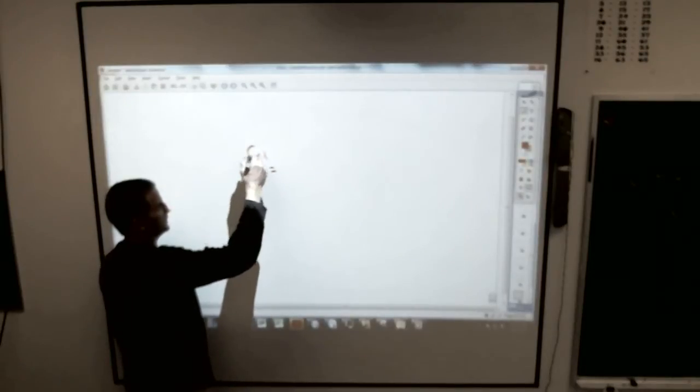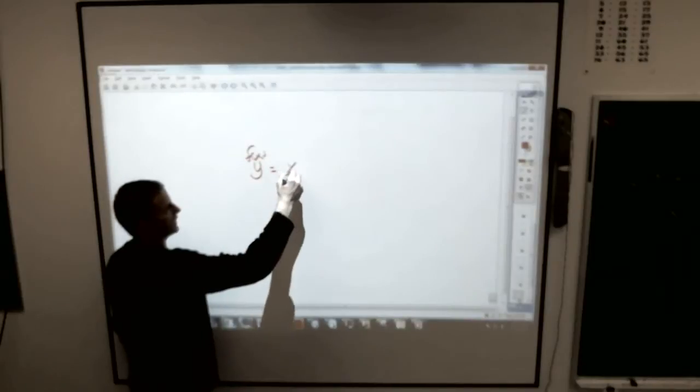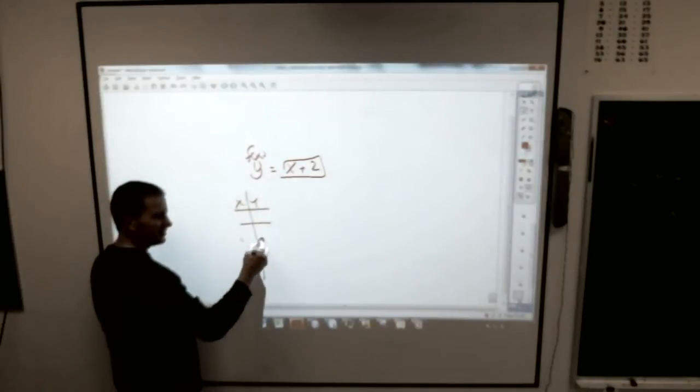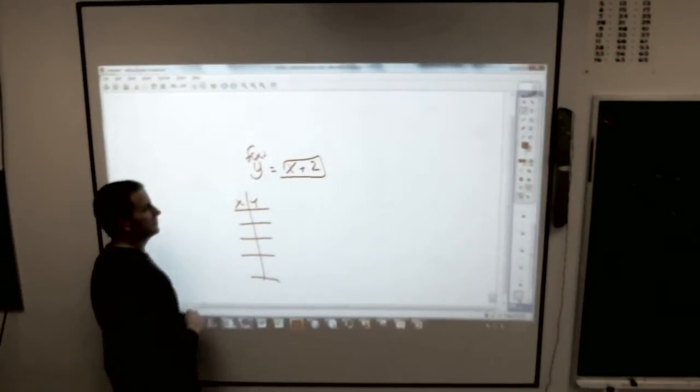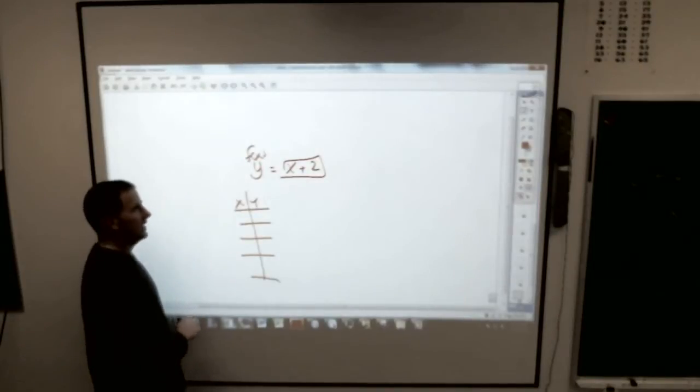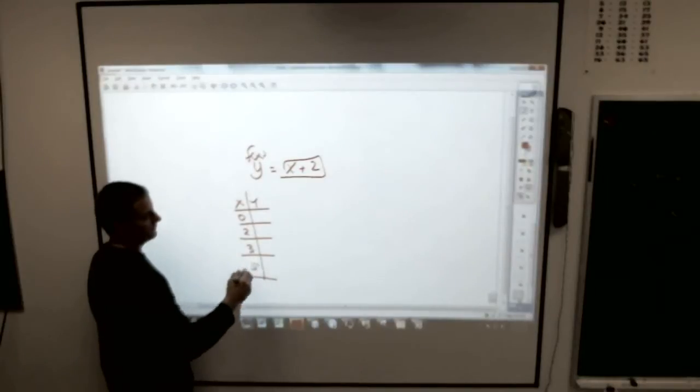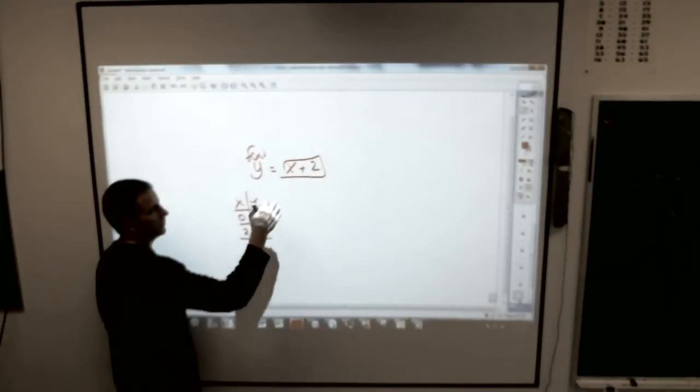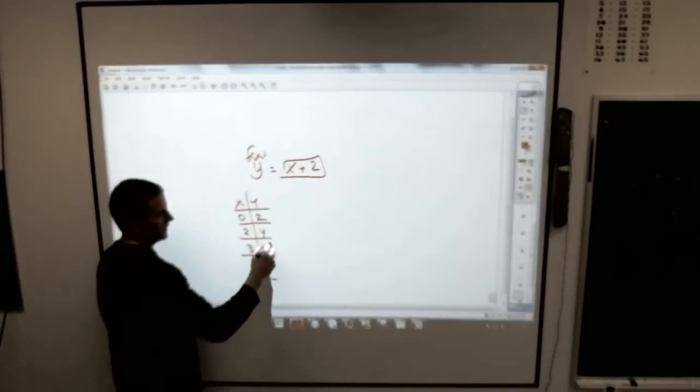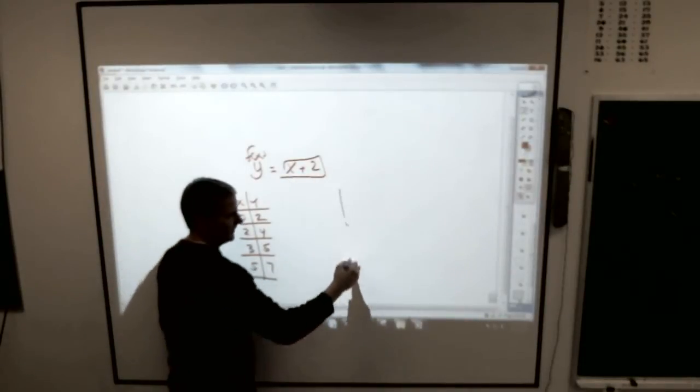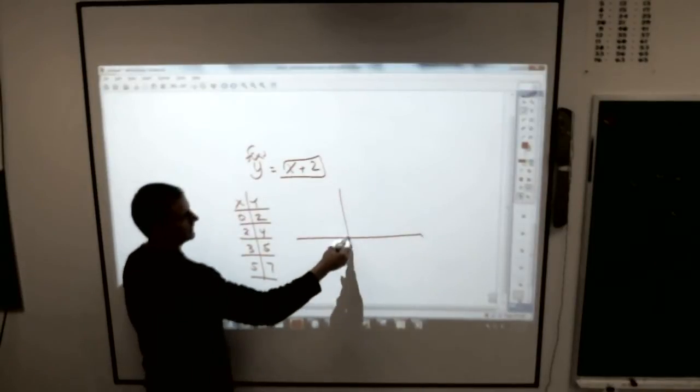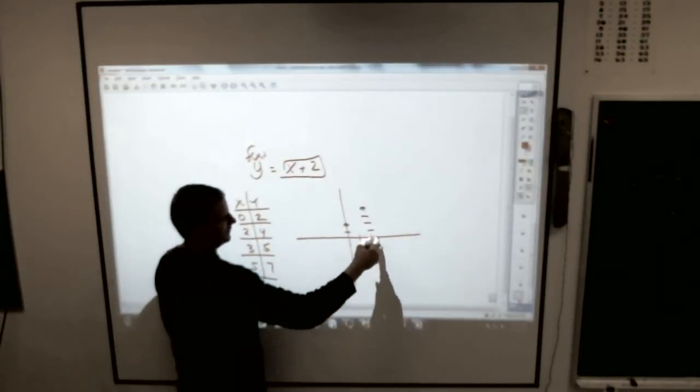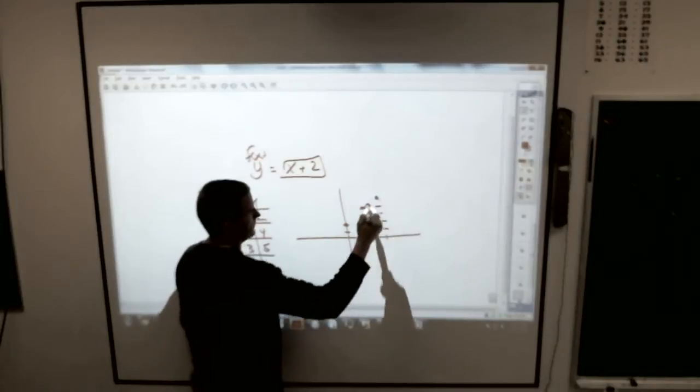Y equals x plus 2, or f of x equals x plus 2. So here's my little function machine. I make a table. I get to pick my x numbers. I'm going to pick zero, two, three, and five. What do I get for y? Zero plus two is two. Two plus two is four. Three plus two is five. Five plus two is seven. If I graph this, I get zero, two, two, four, three, five, and five, seven.